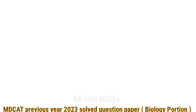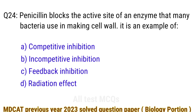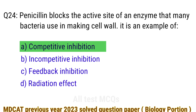Question number 24. Penicillin blocks the active site of an enzyme that many bacteria use in making their cell wall. It is an example of? The right answer is option A: competitive inhibition.